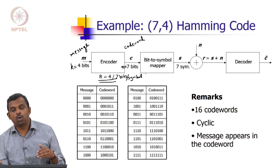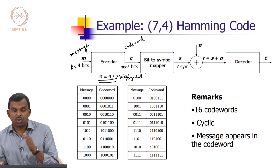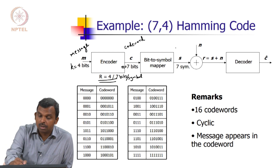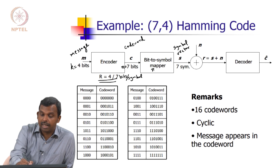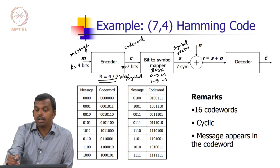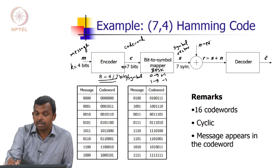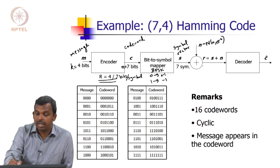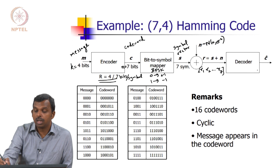Once you convert it into a codeword, everything else remains the same. Each bit gets converted into a symbol vector and the same BPSK mapper is used: 0 goes to plus 1, 1 goes to minus 1. Then noise gets added, which is Gaussian with mean 0 and variance sigma squared. You have 7 received values R1, R2, through R7, and your decoder needs to work.